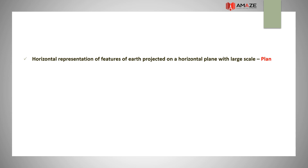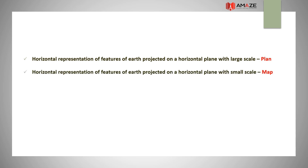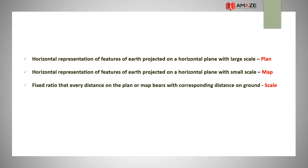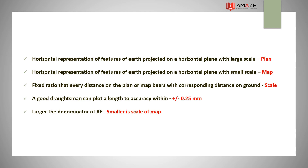Horizontal representation of features of the earth projected on a horizontal plane with large scale is a plan, and with small scale is a map. The fixed ratio that every distance on the plan or map bears with the corresponding distance on the ground is called scale — map distance to ground distance. A good draughtsman can plot a length to accuracy within ±0.25 mm, and a larger denominator of RF (representative fraction) means a smaller scale of map.